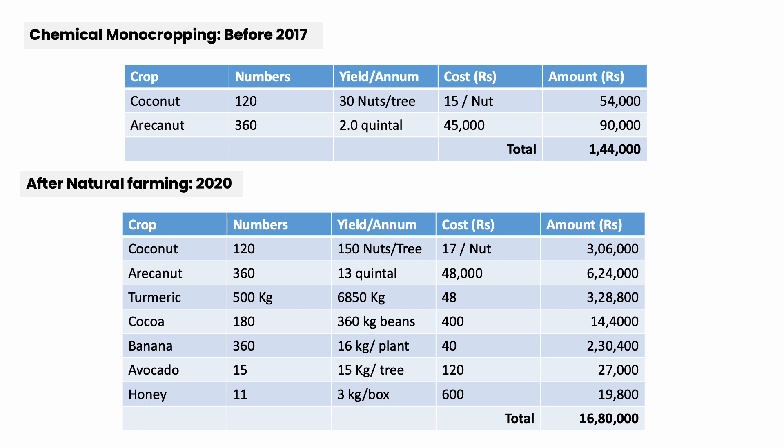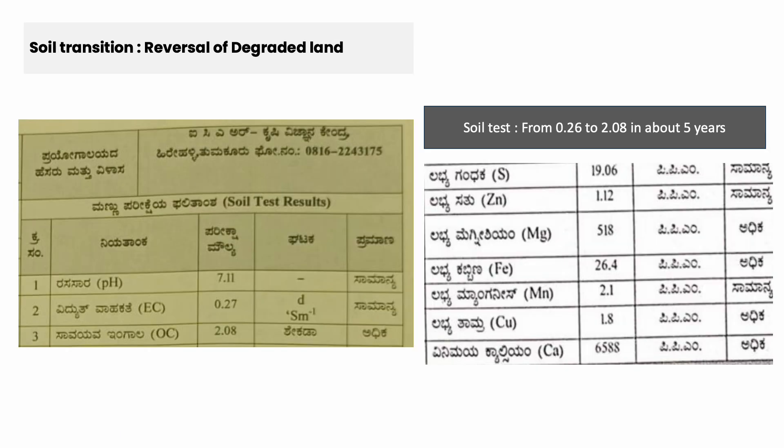Including turmeric and other crops, the gross income goes to 16,80,000 rupees. We are taking the help of KVK to understand quality. This is a quality test done by KVK Atmakur. The pH is now 7.11, which is neutral — it was 7.86 initially. The EC is 0.27, and the organic carbon is 2.08. It was only 0.11 initially when we started with the degraded land.